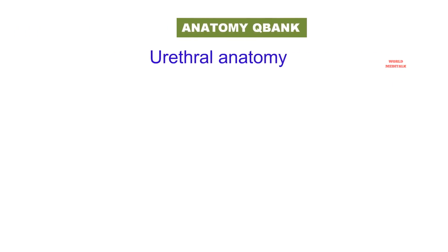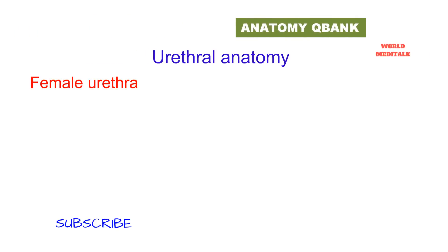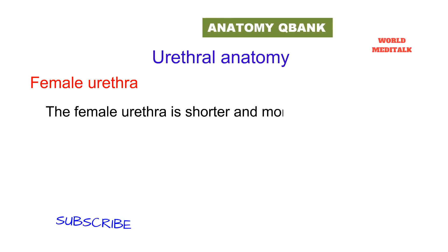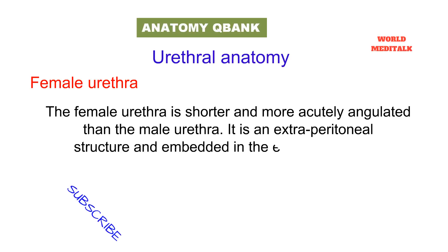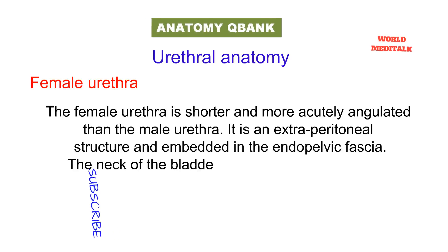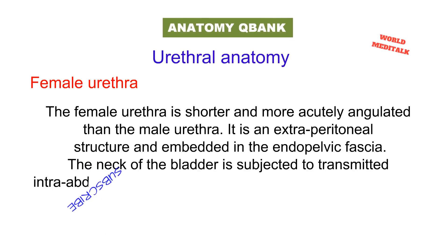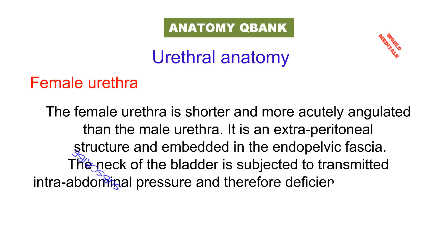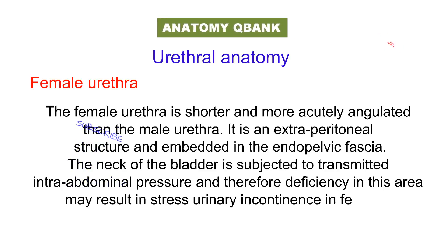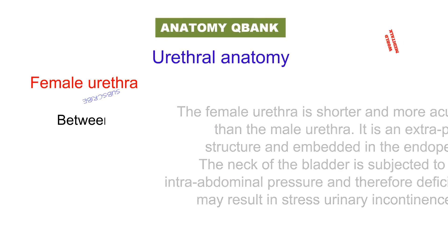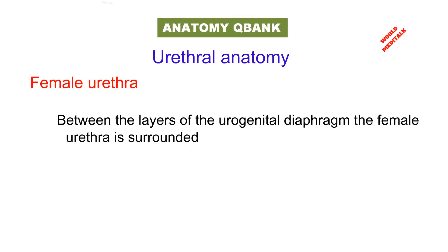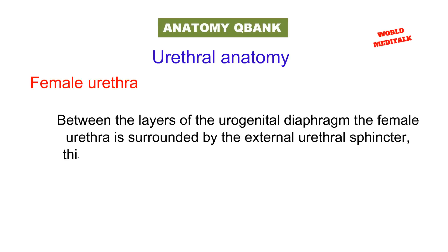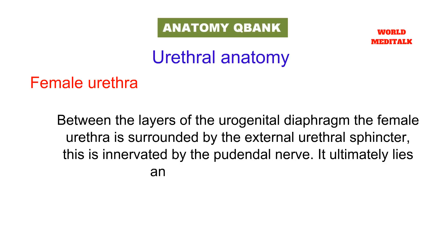Now we will talk briefly regarding urethral anatomy. The female urethra is shorter and more acutely angulated than the male urethra. It is an extraperitoneal structure embedded in the endopelvic fascia. The neck of the bladder is subject to transmitted intra-abdominal pressure, and deficiency in this area may result in stress urinary incontinence in females. Between the layers of the urogenital diaphragm, the female urethra is surrounded by the external urethral sphincter, which is innervated by the pudendal nerve. It ultimately lies anterior to the vaginal orifice.